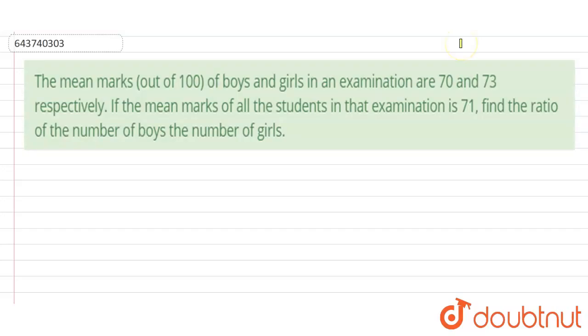Hello students, in this problem we have given the mean marks out of 100 of boys and girls in an examination are 70 and 73 respectively. If the mean marks of all the students in that examination is 71, then we have to find the ratio of number of boys to the number of girls.